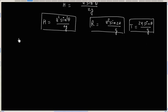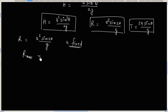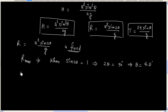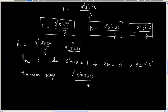Now let us see the range. If u is fixed, range will be maximum when sin 2 theta is equal to 1, that is 2 theta is equal to 90 degrees. This means theta is equal to 45 degrees, and the value of maximum range will be u squared by g.